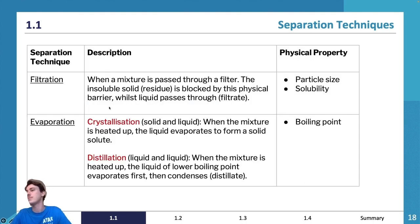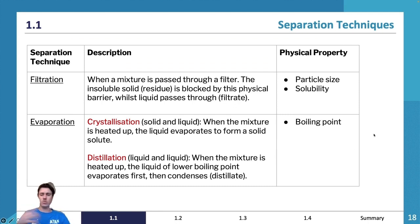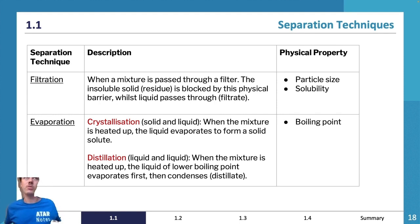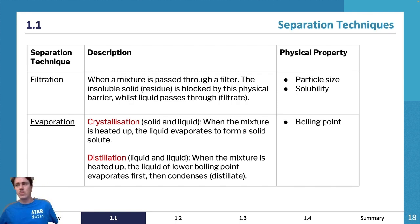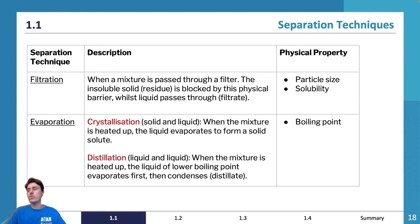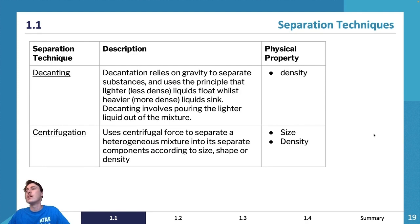Distillation is very common in real-world applications. It's used with crude oil, which is the raw form of petrol. It's also used to make gin and other alcoholic spirits — ethanol components are distilled in that process.